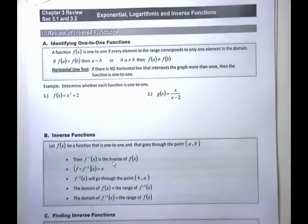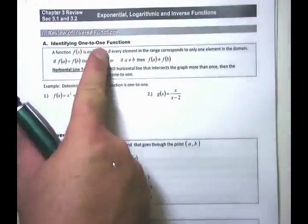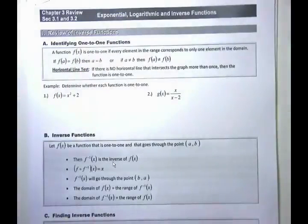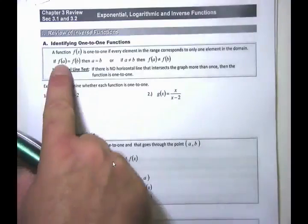Let's start off with the first section of Chapter 3.1, which talks about inverse functions. Before we get into inverse functions, we define what it means to have a one-to-one function. A one-to-one function is a function where, for every element in the range, there corresponds only one element in the domain. One element in the domain maps to one element in the range — one-to-one.